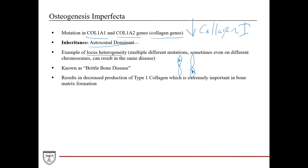Osteogenesis imperfecta is known as brittle bone disease. The reason is that type 1 collagen is such an important part of bone matrix formation. If you have decreased type 1 collagen, you're going to have improperly formed bone matrix that doesn't form that nice compact structure, which compromises the structural component and function of bones.